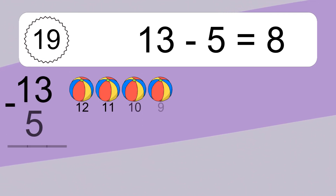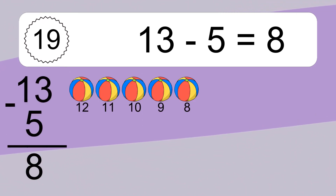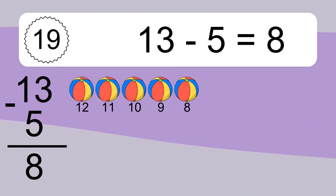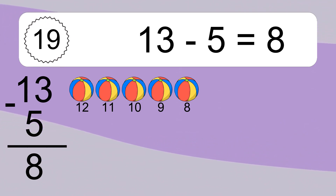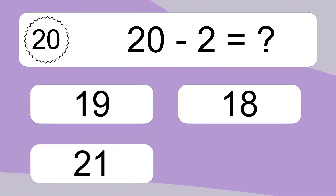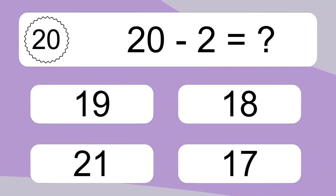13 minus 5 equals what? 13 minus 5 equals 8. Let's count it: 12, 11, 10, 9, 8.